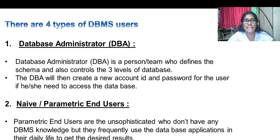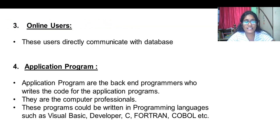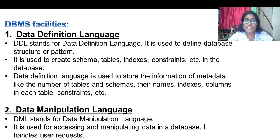Now let us learn about the four types of database management system users. DBMS has different types of users. Firstly, the database administrator who defines the schema and also controls the three levels of the database. Naive users don't have DBMS knowledge but they frequently use the database. Online users directly communicate with the database. Application programmers are the end programmers who write codes for application programs.